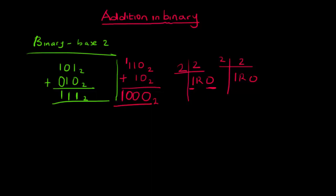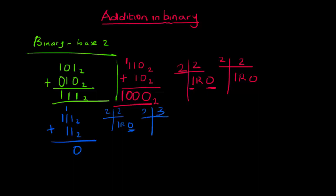Now let's take another question: if I have 111 in base two plus 11 in base two. One plus one is two — I can't write two when working in base two — so I divide: one remainder zero, I write the remainder zero and carry one. One plus one is two, plus the carried one is three. I can't write three, so I divide: two in three is one remainder one. I write one, carry one. One plus one is two, divide: one remainder zero, write zero. Nothing left so I write one. Answer: 1010 in base two.